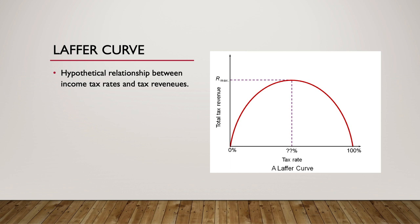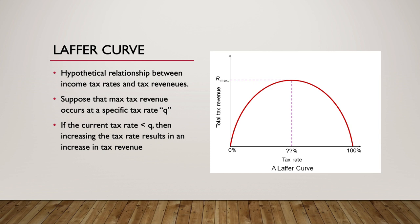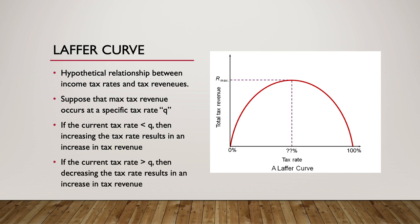The Laffer curve shows a hypothetical relationship between income tax rates and tax revenues. At a tax rate of 0%, tax revenue is 0. And at a tax rate of 100%, tax revenue is also 0 because there would be no incentive to earn income. Potentially, there is a specific rate — we'll call it Q — at which tax revenue is maximized. If the current tax rate is below Q, an increase in the tax rate results in an increase in tax revenue. If the tax rate is above Q, then a decrease in the tax rate would increase tax revenue.